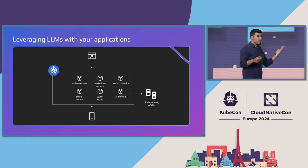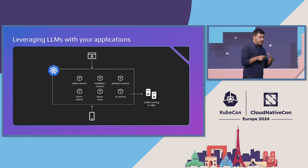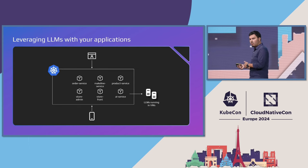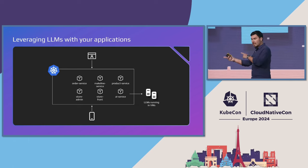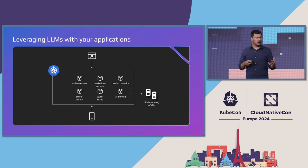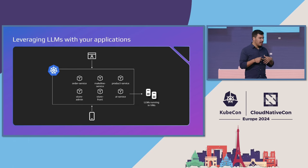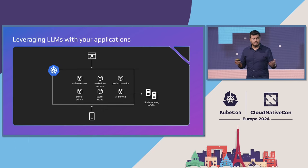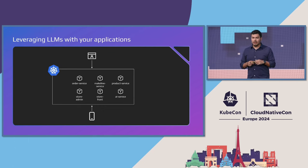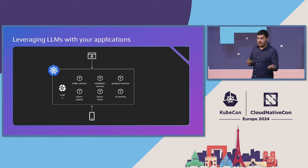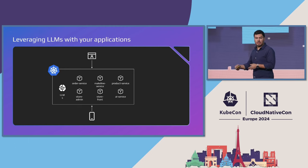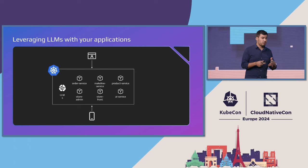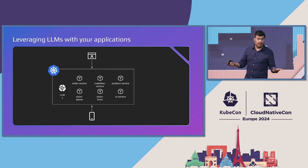As a lot of you know, container images are really a great format — not just for software, but also for models. They're really easy to distribute. You can keep both your code and your models in the same format, and very easily manage a lot of them with easy access to a registry. Moreover, you can deploy them into Kubernetes and actually leverage all the nice primitives and abstractions that Kubernetes gives you — for example, managing heterogeneous infrastructure and doing it at scale.